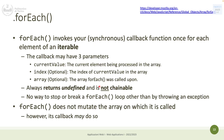forEach can have three parameters. The first, mandatory one is the current value — the value processed by each iteration, like 'letter' in our case. The second, optional parameter is the index, which gives you the index of the current value in the array — so not just 'h' as the first letter, but also zero as its index. The third optional parameter is the array on which forEach is called.